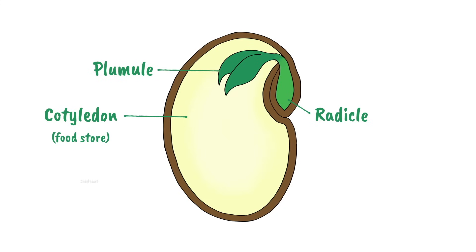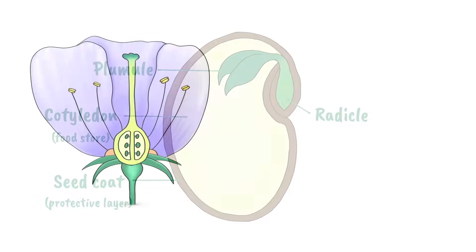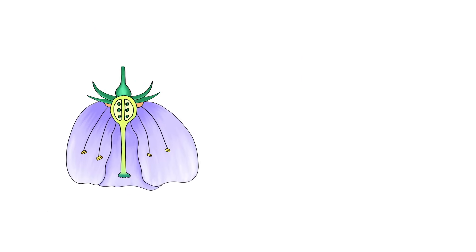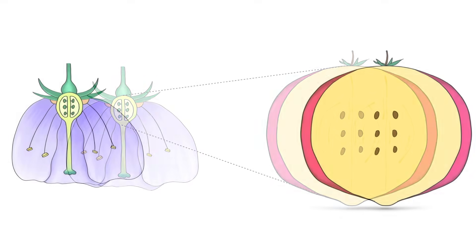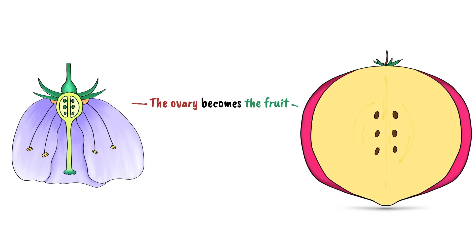Surrounding the seed is a seed coat, a protective layer which forms from the ovary wall. While the ovule develops into the seed, the ovary develops into the fruit. Side by side, it's easy to compare the structures at each stage, with the flower's ovary becoming the fruit with seeds inside which form from ovules.